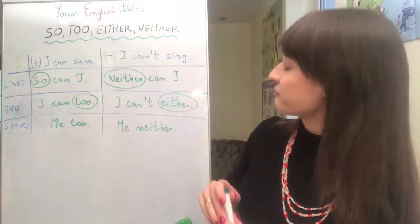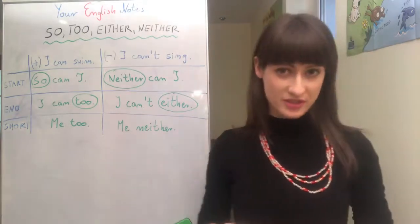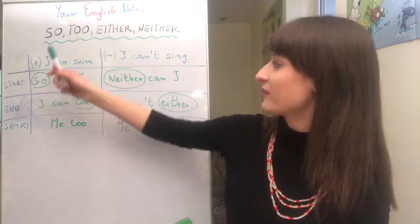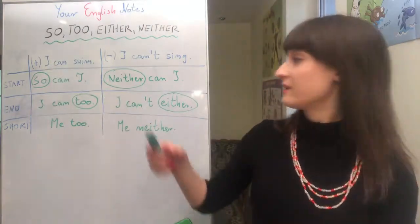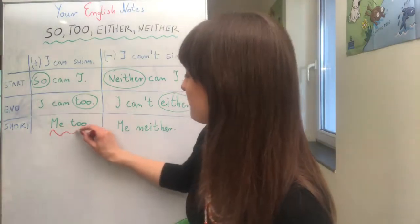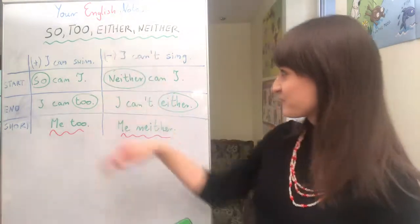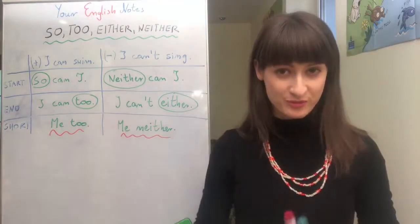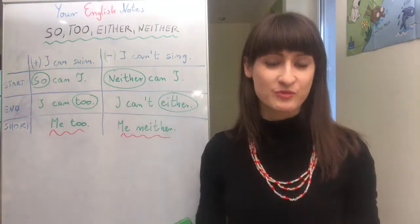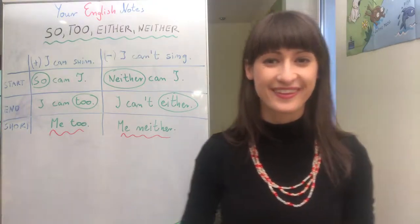So remember: "so," "too," "either," and "neither" can all be used when we agree with somebody. You have to be careful whether you reply to a positive sentence or a negative sentence. I think the shortest option — "me too" or "me neither" — is the best for you. If you would like to get a picture note from this lesson, please subscribe to my newsletter. You'll find the link in the description below. See you next time, goodbye!